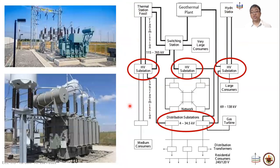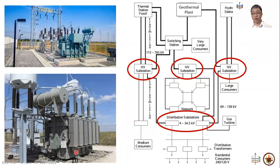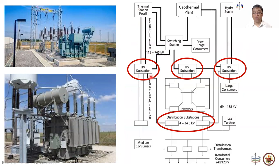Those transmission lines terminate in substations shown here. The main component of the substation is the power transformer, whose function is to transform voltage from a higher level to a lower level. For example, near the power plant, transformers step up from lower voltage to higher voltage for transmission, and then from the transmission lines going to customers, transformers step down from higher voltage to lower voltage.